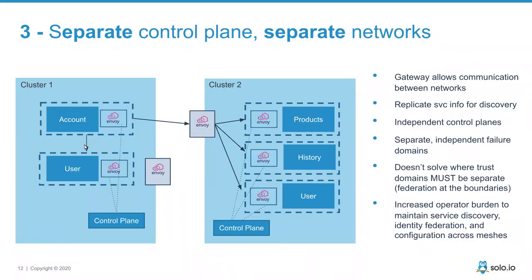A third pattern — probably most desirable for isolation — is running separate control planes in different clusters. In this model you have more autonomy and isolation. The downside is that it significantly increases the operator burden. You need to ensure that certificates used for TLS and mutual TLS all come from the same root, manage service discovery so one cluster knows about services in the other, and handle failover routing configuration.